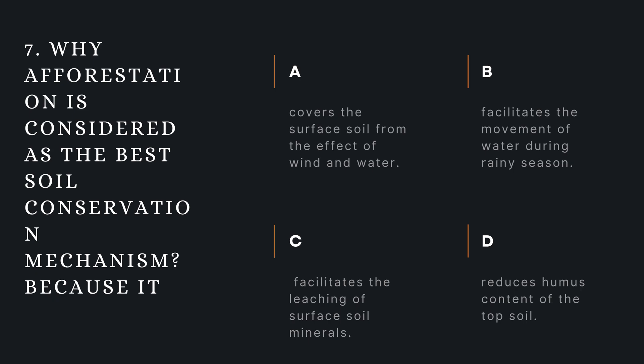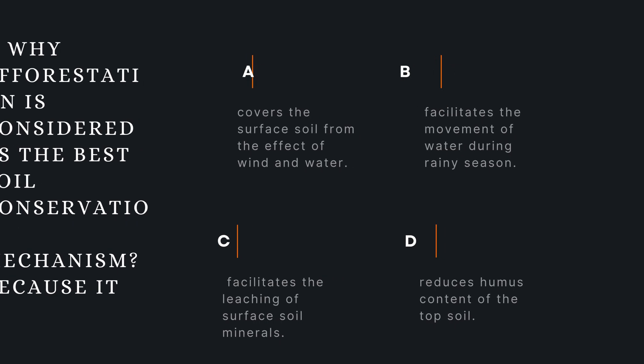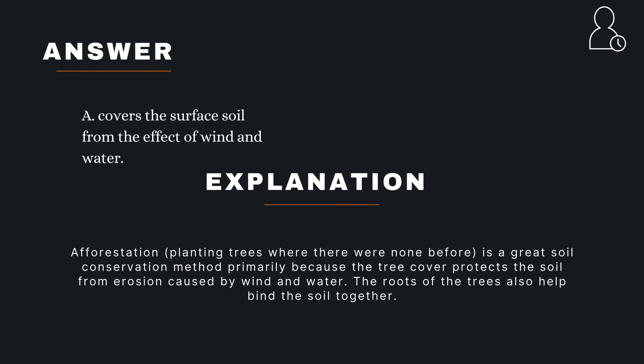Question 7. Why is afforestation considered as the best soil conservation mechanism? A — Because it covers the surface soil from the effect of wind and water; B — facilitates the movement of water during rainy season; C — facilitates the leaching of surface soil minerals; D — reduces humus content of the top soil. The correct answer is A. Explanation: Afforestation, planting trees where there were none before, is a great soil conservation method primarily because the tree cover protects the soil from erosion caused by wind and water. The roots of the trees also help bind the soil together.